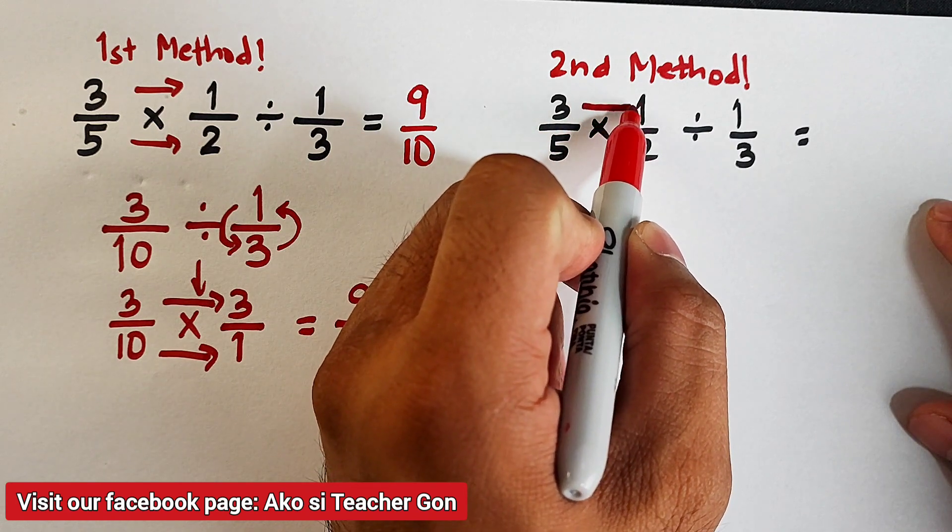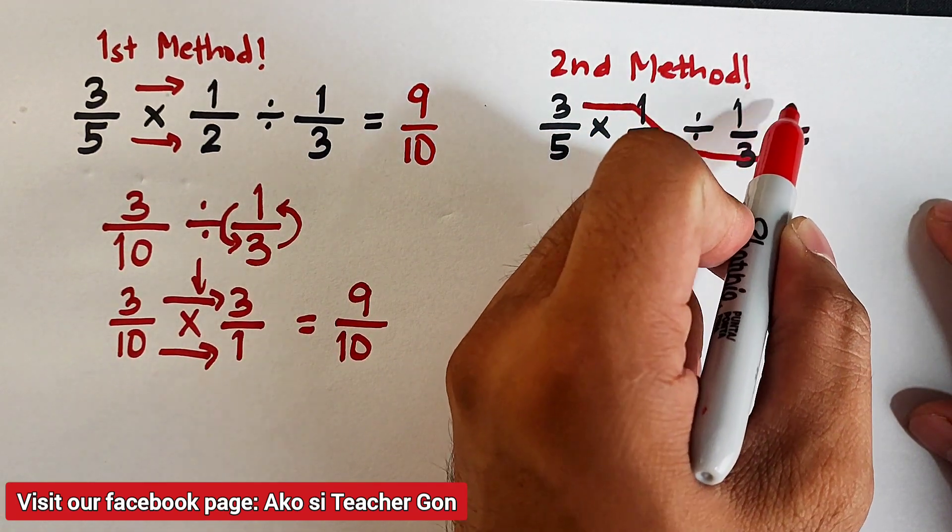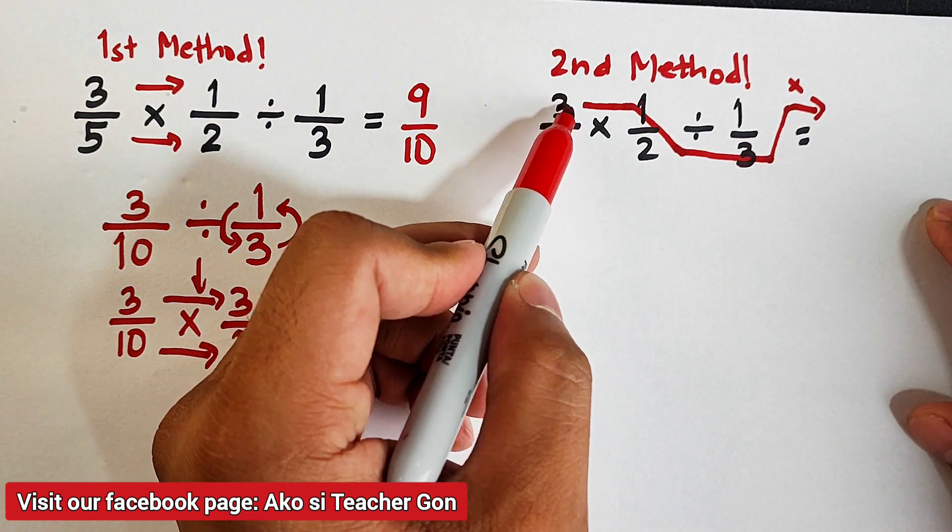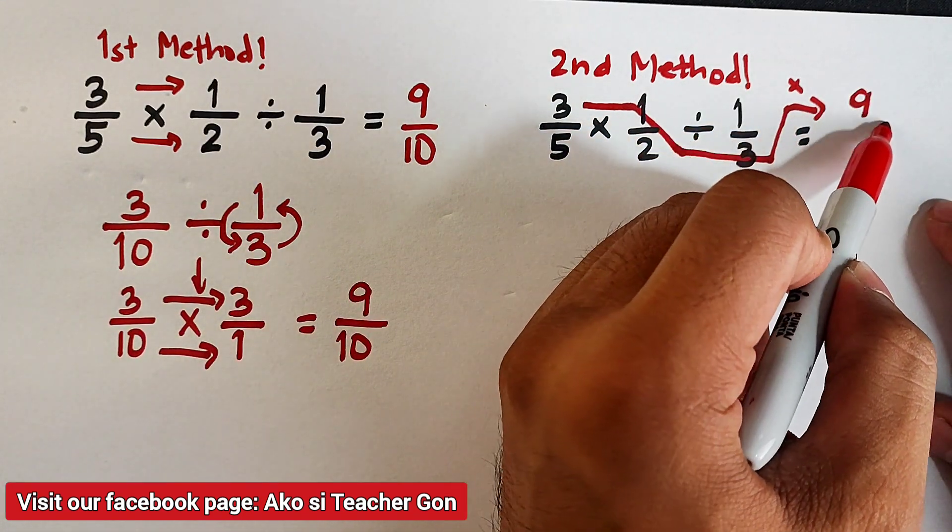Multiply this, go down here, here, up, and multiply all the numbers. 3 times 1 times 3 is equal to 9.